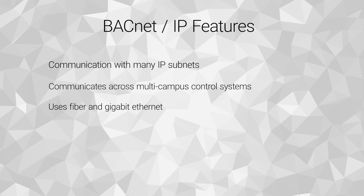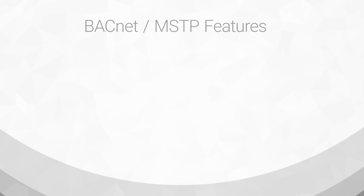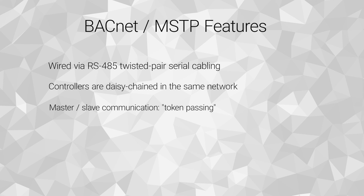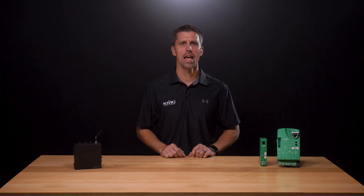BACnet over IP relies upon the protocol rules of IP and Ethernet. With BACnet over MSTP, each device is wired via RS-485 twisted pair serial cabling, daisy-chained together into one network. Communication is based around passing tokens, which is a way for devices on the same MSTP network to take turns initiating conversations with other devices. Only master-type devices can have the token and request or send data without being specifically requested. Sensors are sometimes manufactured to operate as slave devices and can only send messages when specifically requested — they never have the token. All KMC devices are masters and can talk on the network directly.